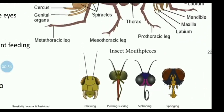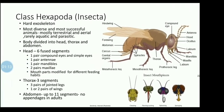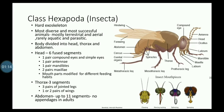The mouth parts of these organs are modified to suit their feeding habits. Ants have chewing mouth parts; others have piercing and sucking mouth parts. Some have siphoning type and sponging type mouth parts. The ancestral or generalized type of mouth parts is also present. The thorax is made up of three segments.